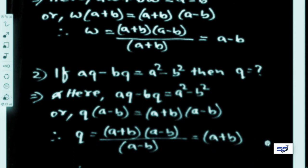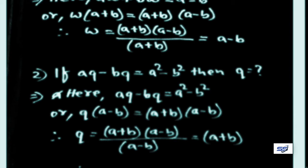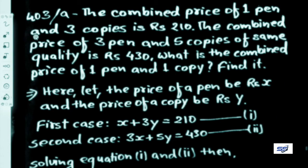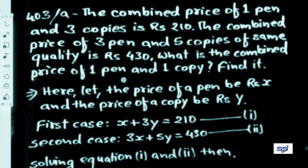In this way, from rule one we get w equals a minus b, and from rule two we get q equals a plus b. These rules shall be applied while solving any equation. Now, our question: the combined price of one pen and three copies is Rs 210. The combined price of three pens and five copies of the same quality is Rs 430. What is the combined price of one pen and one copy?